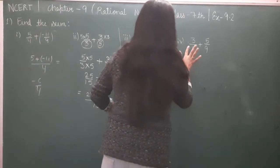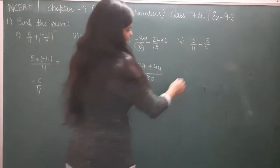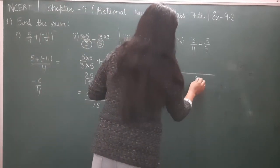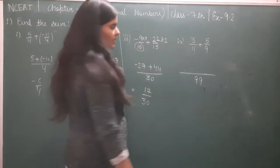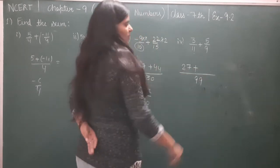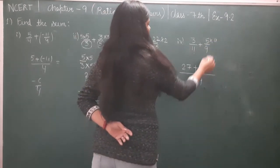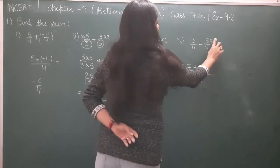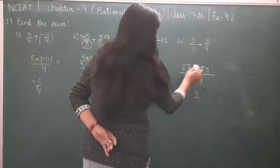Now 3/11 plus 5/9. We take LCM of 11 and 9, which is 99. Divide 99 by 11, answer is 9, so 9 times 3 equals 27. Plus. Divide by 9, you get 11, multiply 11 by 5 which equals 55. Now 27 plus 55: 5 times 7 is 12 carry 1, 7 plus 1 is 8, giving 82/99.